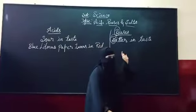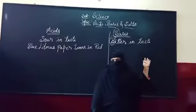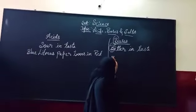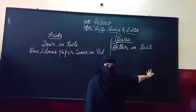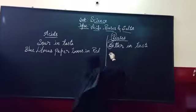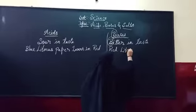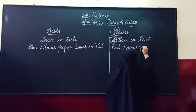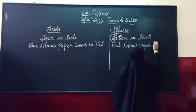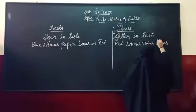The other side, what happens to that? So, here, the red litmus paper turns into blue. Red litmus turns blue.